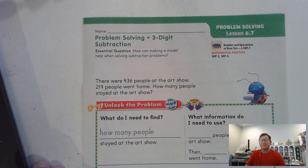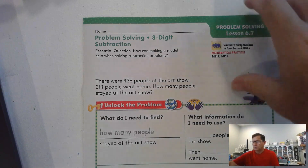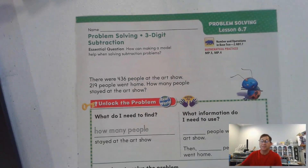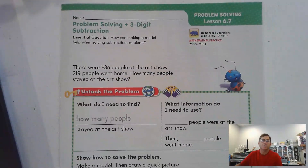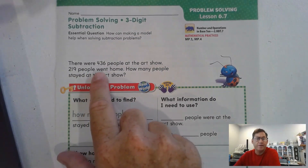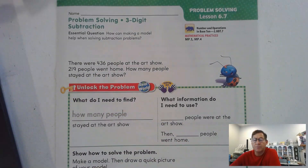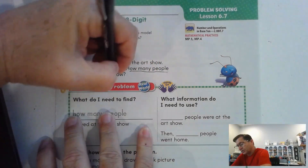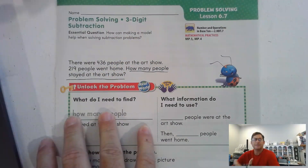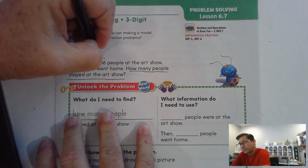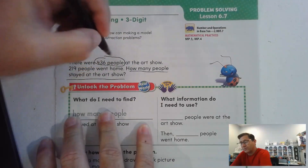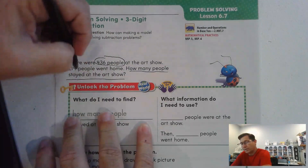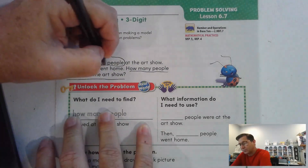Hello everybody. In today's lesson 6.7, we're going to do some problem solving with three-digit subtraction. Let's look at the first question: there were 436 people at the art show. 219 people went home. How many people stayed at the art show? Underline the question and then circle the important information. We know that there were a total of 436 people and that 219 people went home.